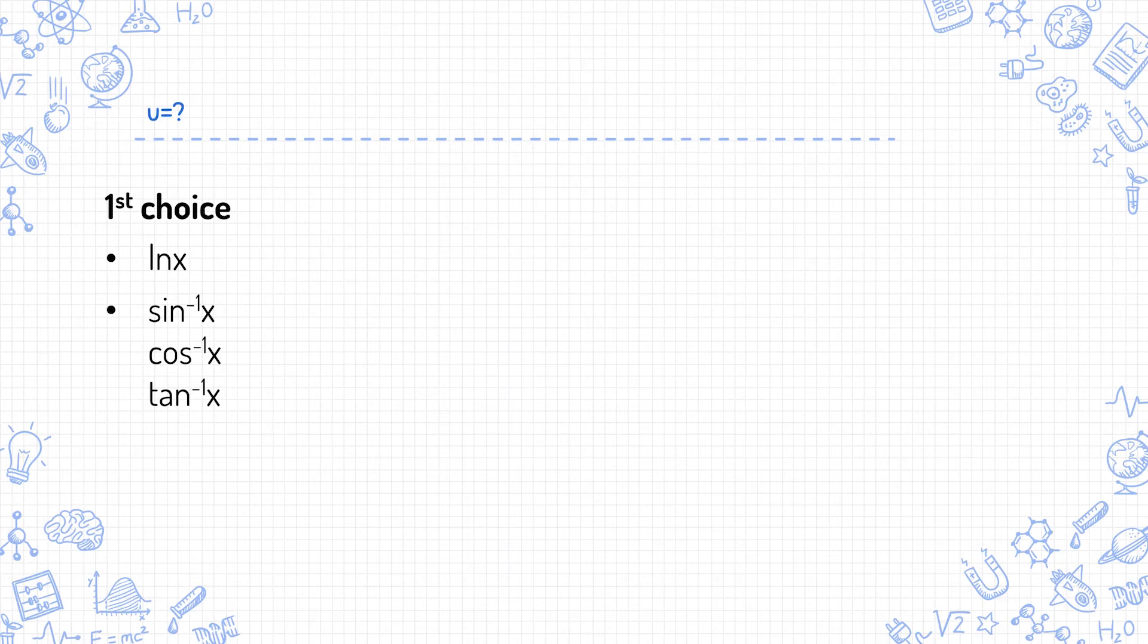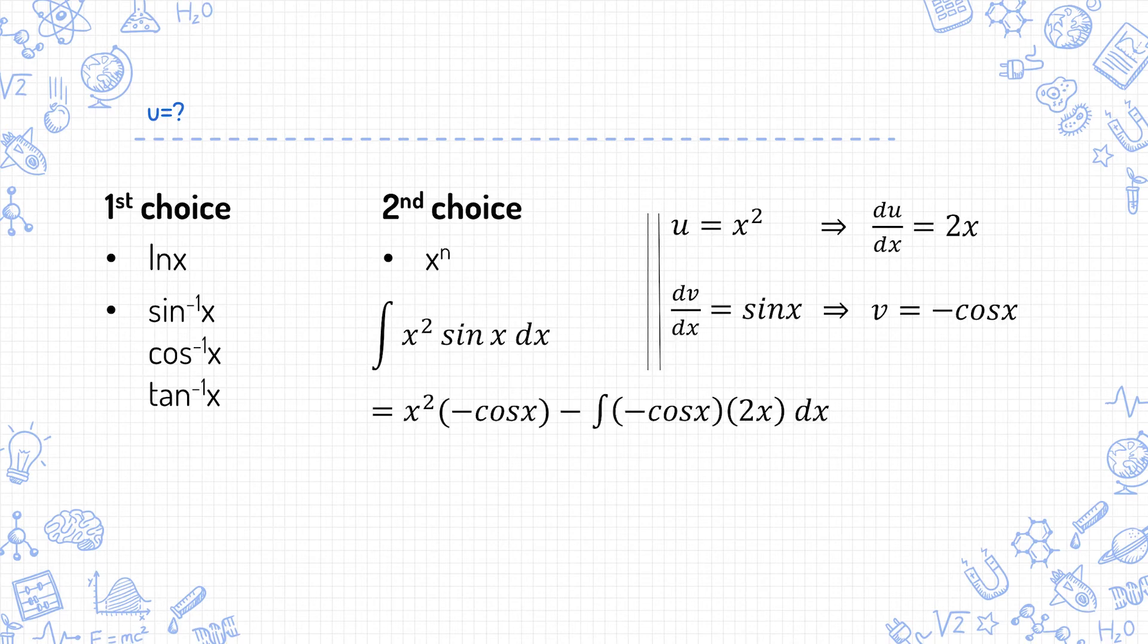If there's no ln or inverse trig function anywhere, your second choice would probably be x to the power of n. To get a sense of why, I'll run through an example, integrating x squared sine x. So if I choose u equals x squared, du/dx equals 2x and dv/dx equals sine x, v equals negative cosine x. So uv minus integral of v du/dx. Notice that previously, it was x to the power of 2. Now, you have an x to the power of 1 here.